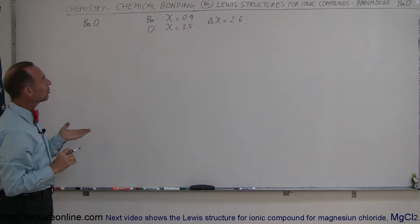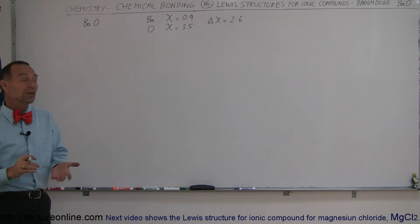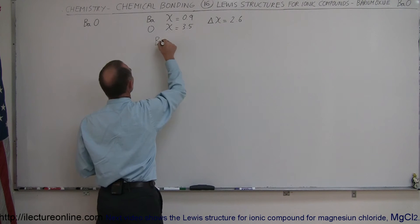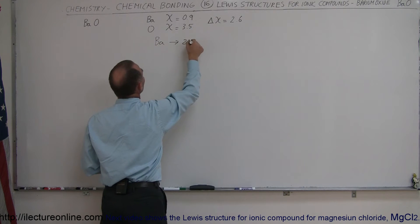The next thing we need to do is figure out how many valence electrons each of these atoms has. In the case of barium, it has two valence electrons.